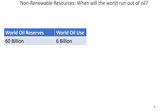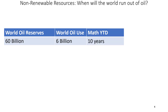An example of a non-renewable resource is petroleum or oil. So what do we do with these non-renewable resources — when will they end? When will the world run out of oil? Here is some real data from the federal government: world oil reserves are 60 billion barrels and world oil use is 6 billion barrels per year. If you do the math, the year to depletion would be about 10 years — so in 10 years we might run out of oil.